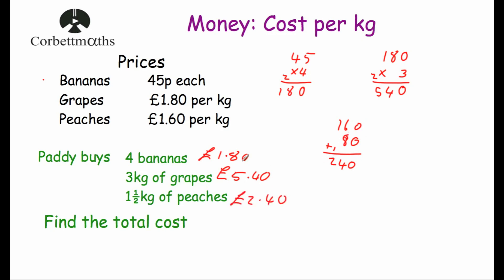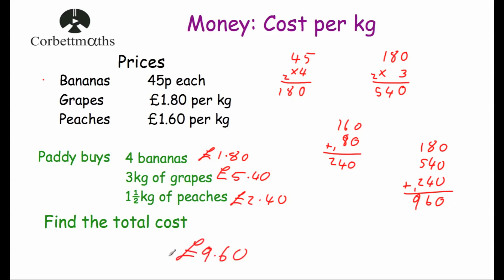Now we know the cost of the bananas (£1.80), the grapes (£5.40), and the peaches (£2.40). Adding them together: zero plus zero plus zero is zero; eight plus four plus four is 16, put the six down, carry the one; one plus five plus two plus one is nine. So the total cost is 960 pence, or £9.60.